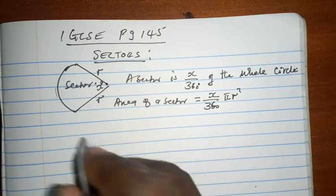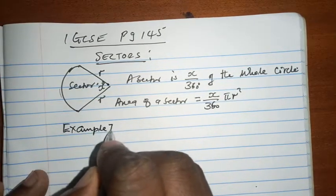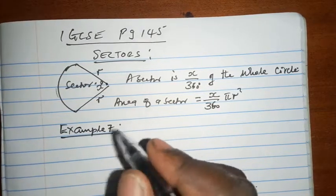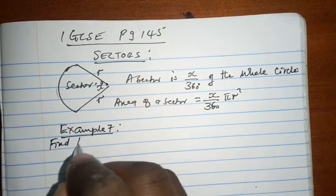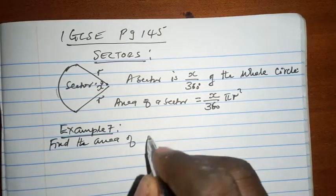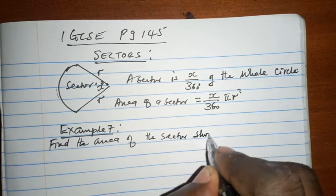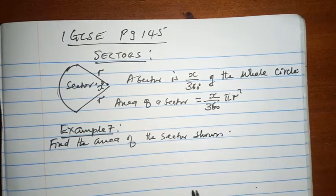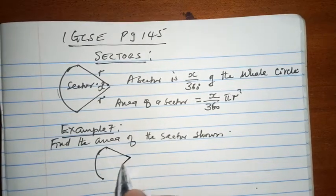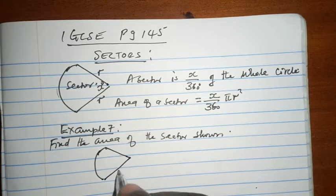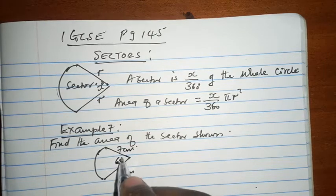Let's look at example 7. Find the area of the sector shown below. It goes without saying that is an arc, that is a radius, that is a radius. This is 7 cm, this is 7 cm, this is 65 degrees.